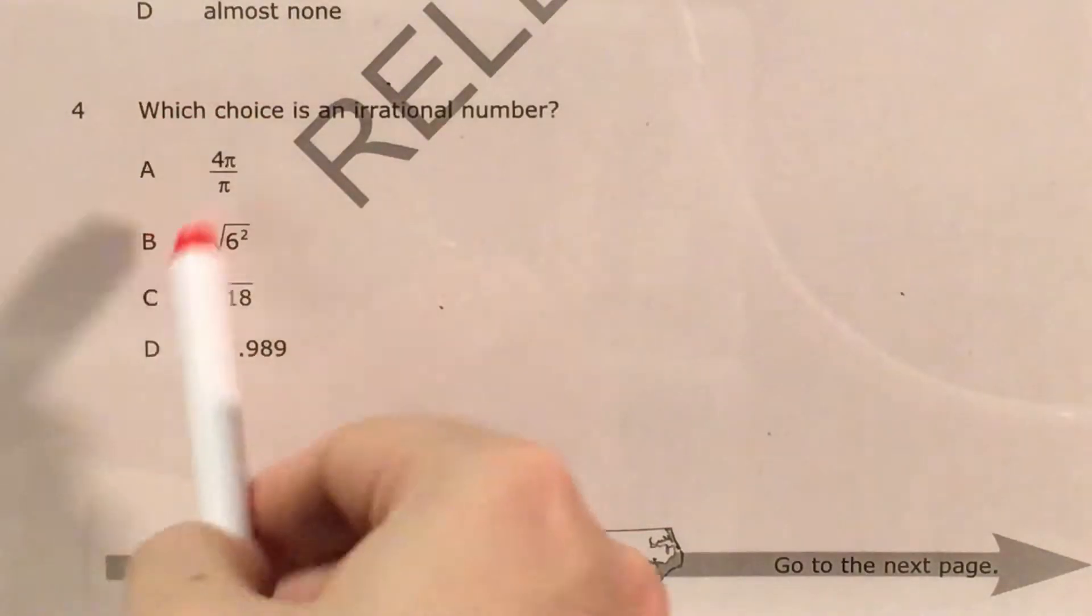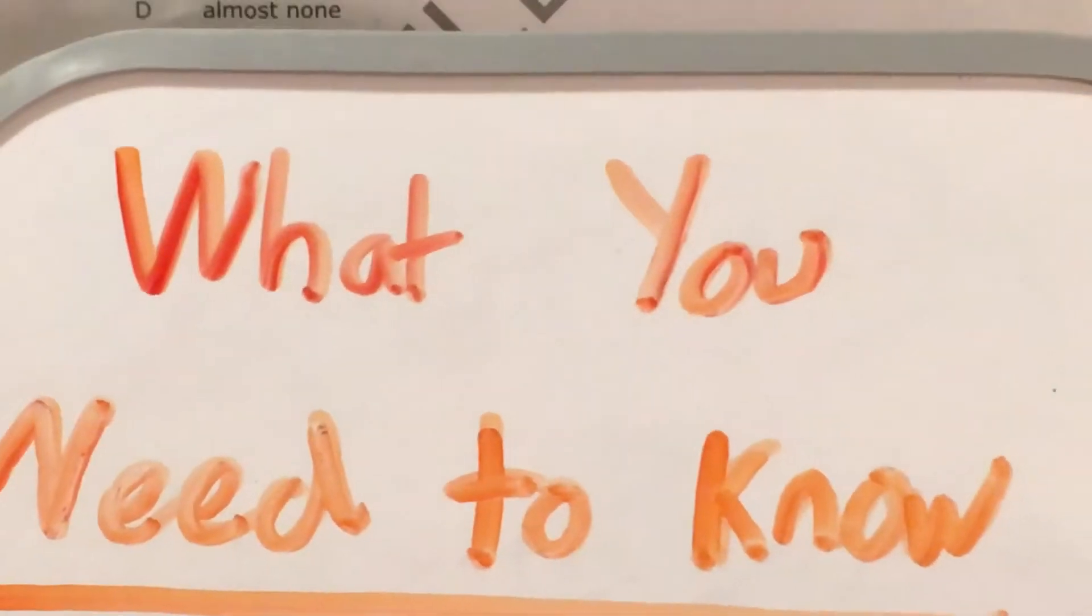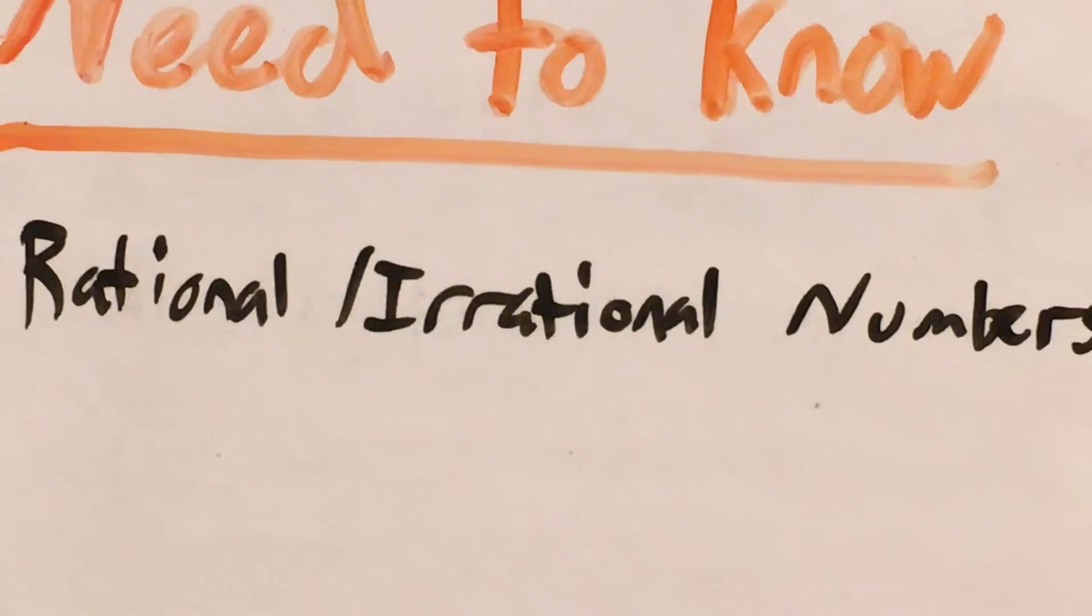We're trying to find out which of our answer choices is an irrational number. So in order to do this question or a question like it, we need to know about rational and irrational numbers. I'm going to start by giving a brief introduction to what a rational versus irrational number is.